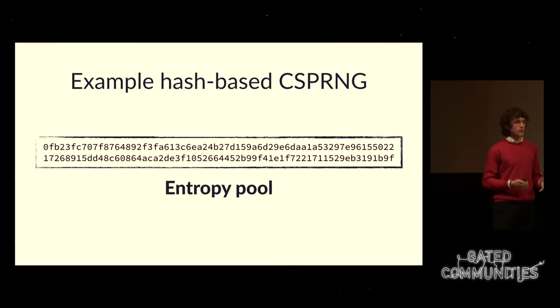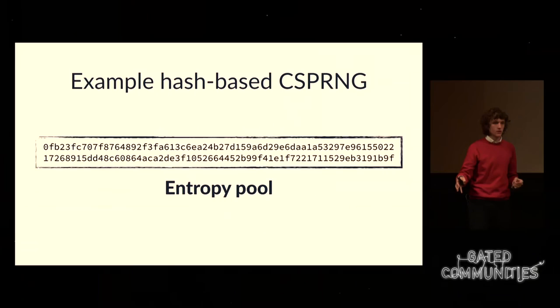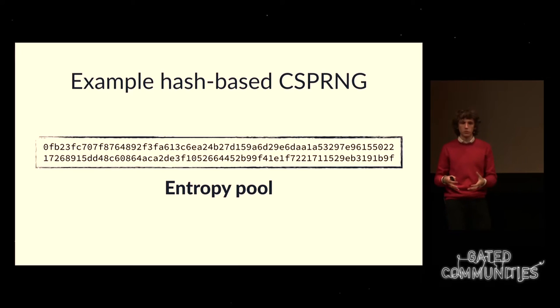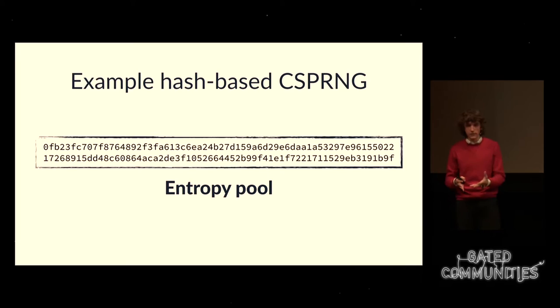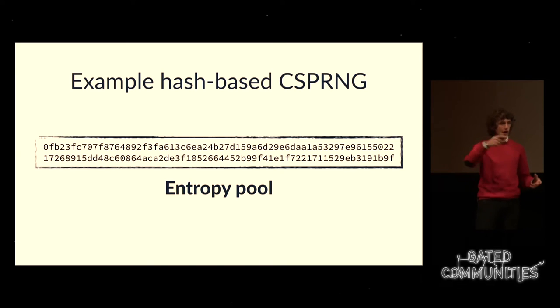We end up with what we call an entropy pool. To figure out this value, you need exactly all the events that led to it. An attacker has no better way to determine what the entropy pool is than to guess all the different hard disk timings and mouse movements that happened all the way up to now.